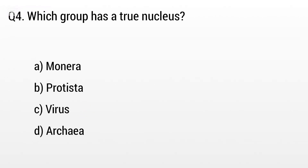Question 4. Which group has a true nucleus? Option A: Monera, B: Protista, C: Virus, D: Archaea. The right answer is option B, Protista.